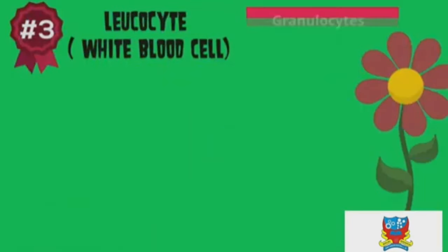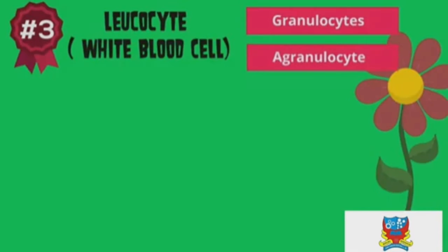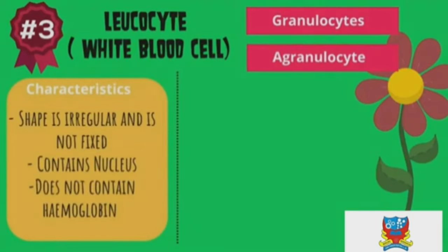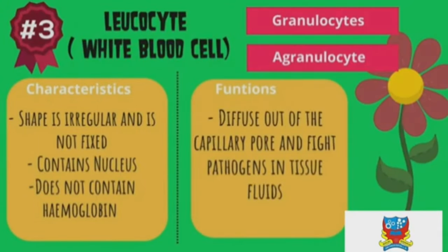Leukocytes, also known as white blood cells, are divided into granulocytes and agranulocytes. Their characteristics include an irregular, non-fixed shape, the presence of a nucleus, and the absence of haemoglobin. Their function is to diffuse out of capillary pores and fight pathogens in tissue fluids.